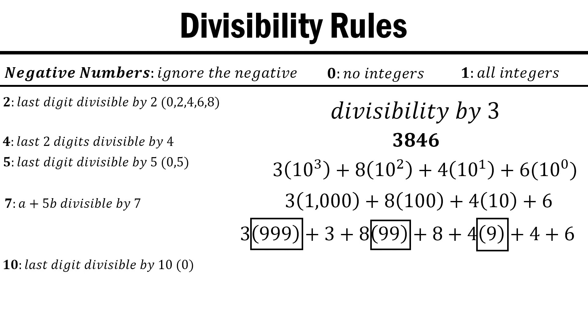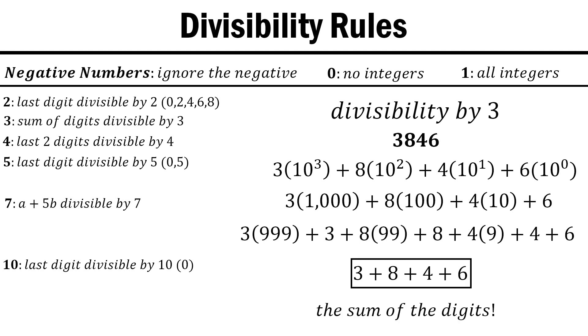and 9, we can ignore those terms, and we only have to check 3 plus 8 plus 4 plus 6. This, you might recognize, is just the sum of the digits. This rule also works for 9, since it also divides 9, 99, 999, and so on. The sum of the digits in that case has to divide 9 instead of 3.